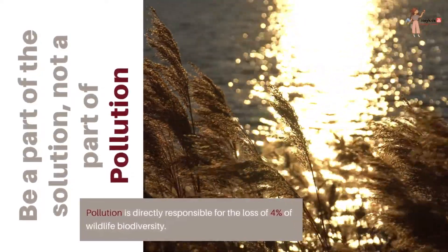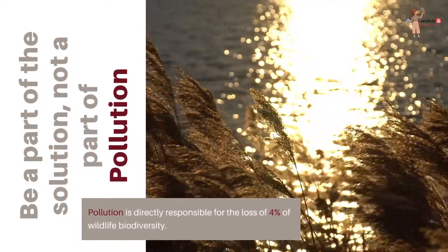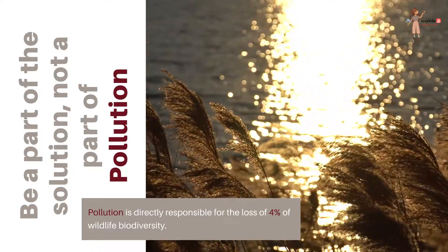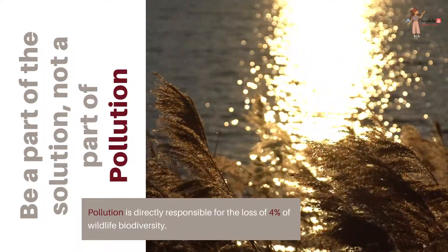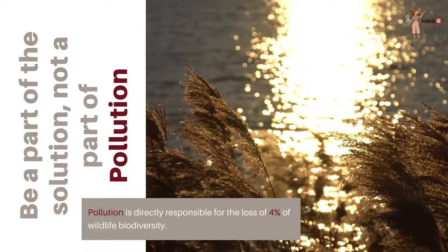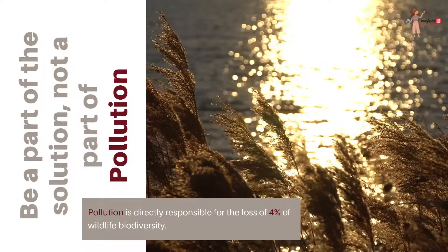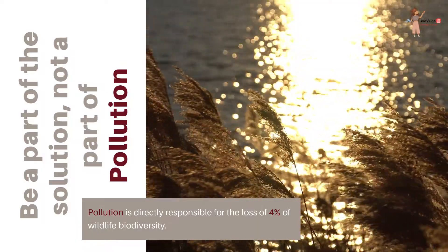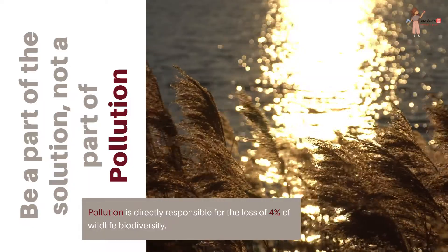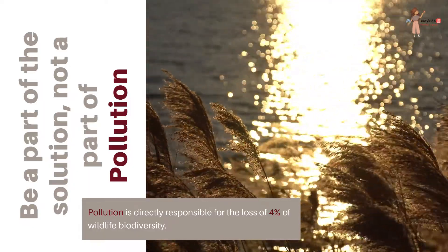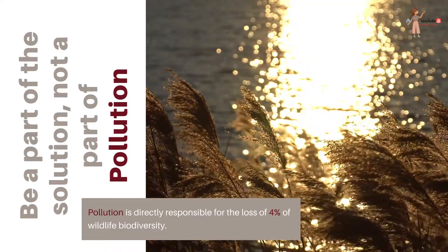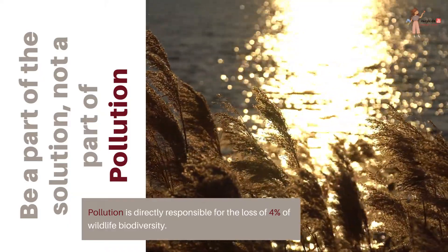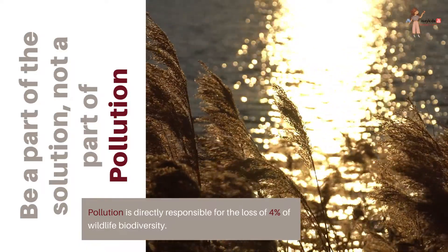Next is pollution. Waterways, groundwater sources, and air are all polluted with runoff from manufacturing facilities, mining practices, and fumes from traffic and burning fossil fuels. Pesticides sprayed onto crops inadvertently kill other plant species. Garbage and littering fills the land with non-biodegradable plastics that can be consumed by animals both on land and in sea. All of these reasons explain why pollution is directly responsible for the loss of 4% of wildlife biodiversity.